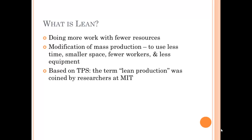What is LEAN? You've been asked this question before. It's doing more work with fewer resources — doing more with less. LEAN is a modification of mass production: mass production in less time, in a smaller space, with fewer workers and less equipment. It's based on TPS, the Toyota Production System. The term LEAN production was coined by researchers at MIT in the 80s, but it is based on the Toyota Production System that arose from Japan.